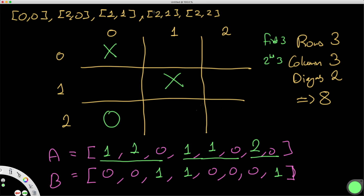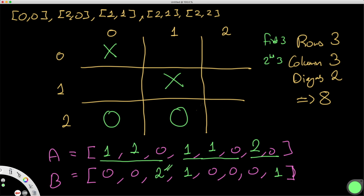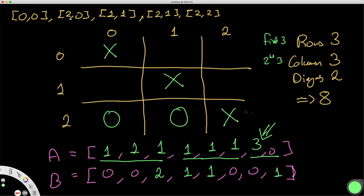Continuing: B plays at 2,1 — the 2nd row now has two O's, meaning B is just one away from winning in that row. We also account for the 1st column. Finally, X plays at 2,2 — that's the 2nd row and 2nd column, and most importantly it's also on the primary diagonal. So the primary diagonal value in A's array increases to 3, meaning A has won. When any value reaches 3, that player has won in one of the eight possible ways.